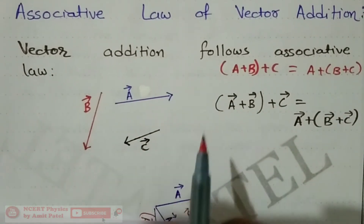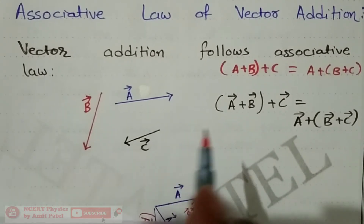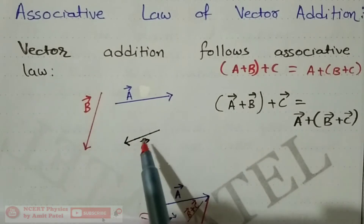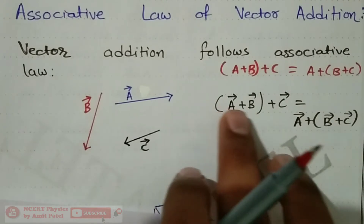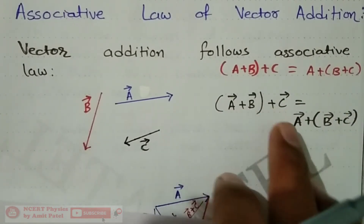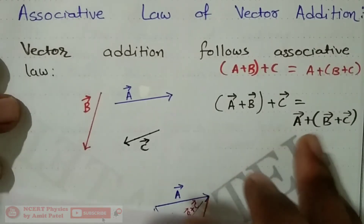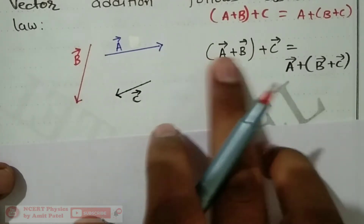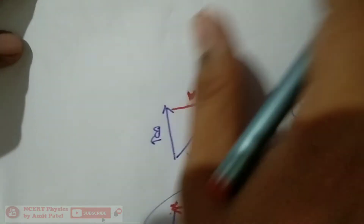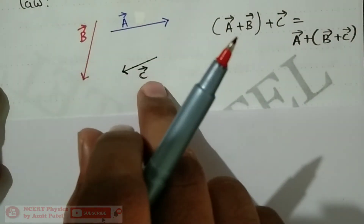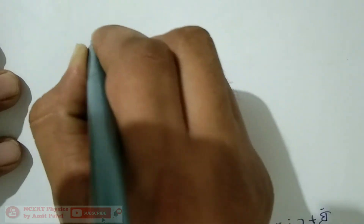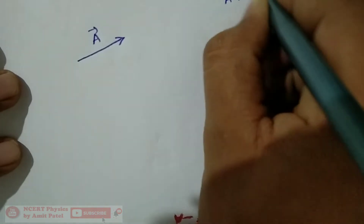Associative law of vector addition — vector addition associative law को follow करती है। मानो कि तीन vector हैं: vector A, B, और C। तो उनके लिए associative law क्या बनेगा? Vector (A plus B) plus C is equal to A plus (B plus C). मतलब यह दोनों vector का addition करके उसमें C add करो, या B plus C का addition करके उसे A में add करो — result same होगा।